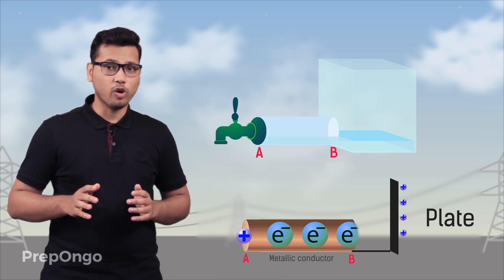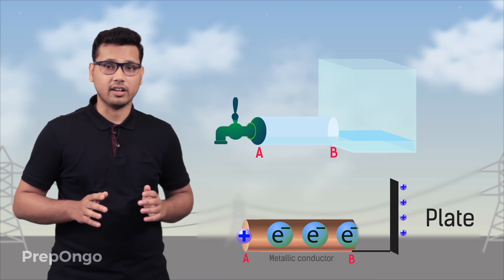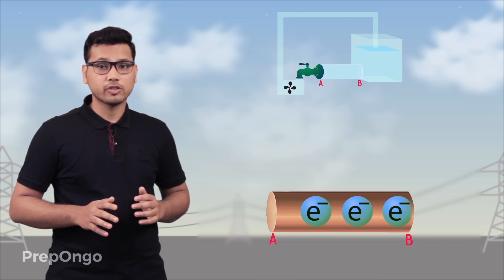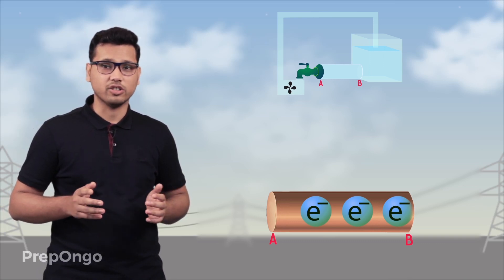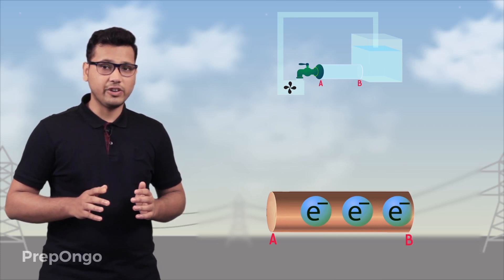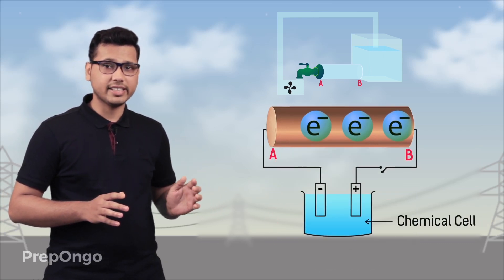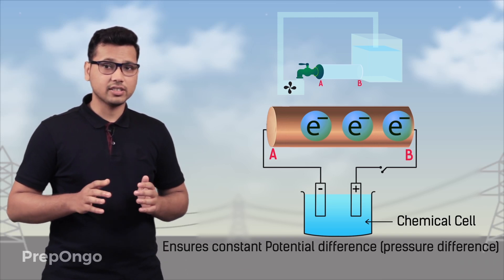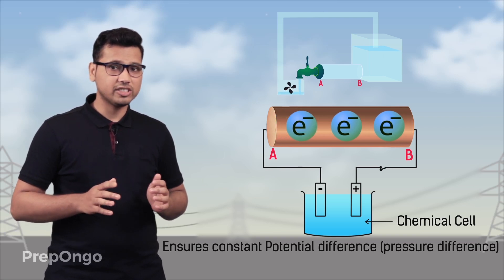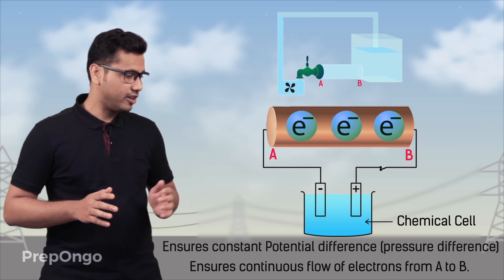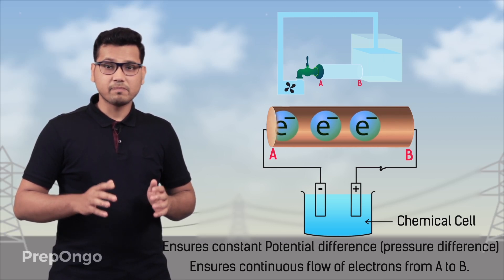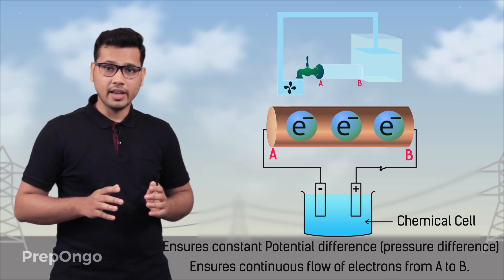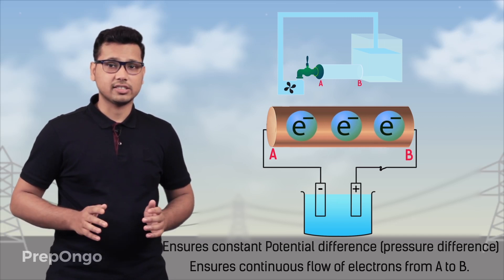To ensure continuous flow of electrons, we have to again attach some external agency. In the case of water we attached a motor, but we can't attach the same motor here because a motor pumps water — it doesn't pump electrons. So to pump the electrons we attach a chemical cell. This chemical cell ensures a constant pressure difference, here termed as potential difference. And this potential difference ensures a continuous flow of electrons from point A to point B, hence the current flows continuously.